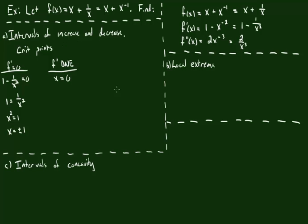We're going to find intervals of increase and decrease using a sign chart, which is essentially a number line with the critical points marked off: 0, negative 1, and positive 1. We want to find where the derivative is positive or negative inside each interval. The key insight is that to change from positive to negative derivative or vice versa, it has to either be 0 or fail to exist — and those things only happen at the critical points we already found.